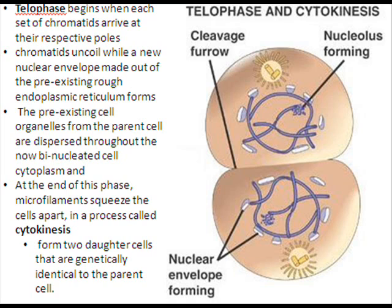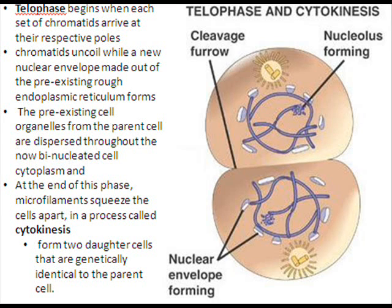The chromosomes then decondense, completing mitosis. Cytokinesis also occurs — the division of cytoplasm and organelles — with a cleavage furrow splitting the cell and making two identical daughter cells.